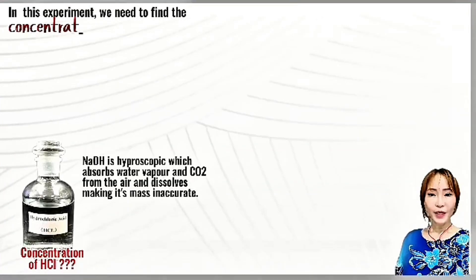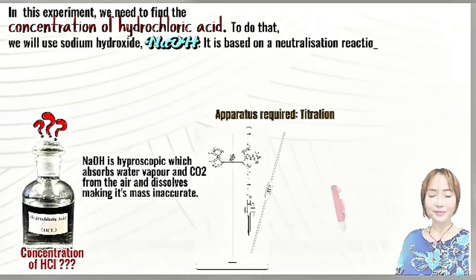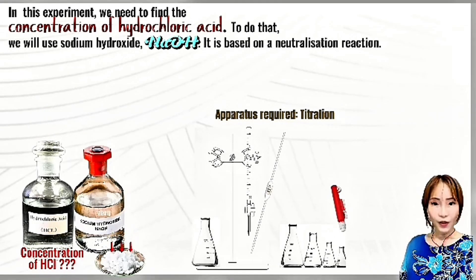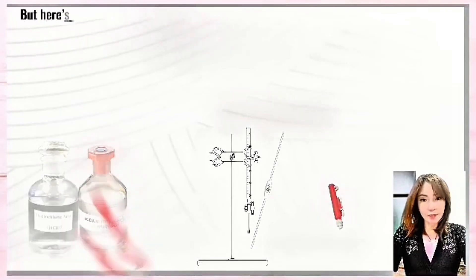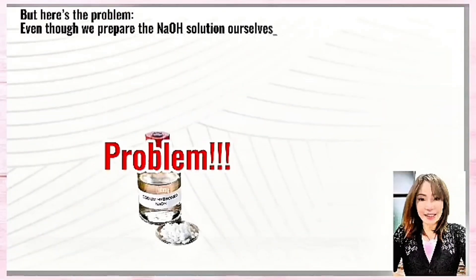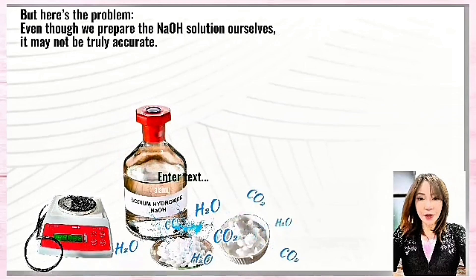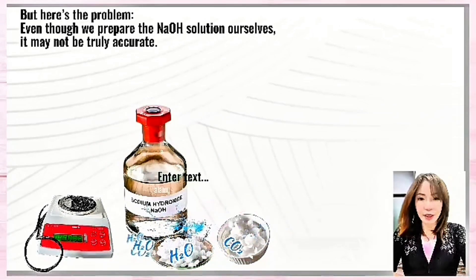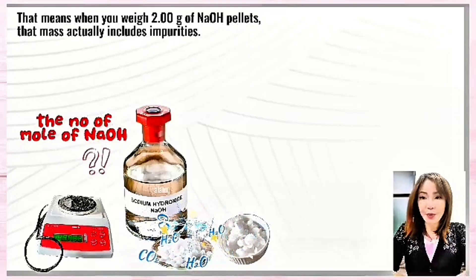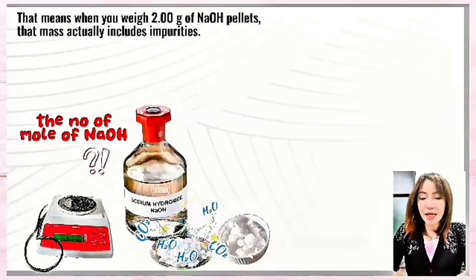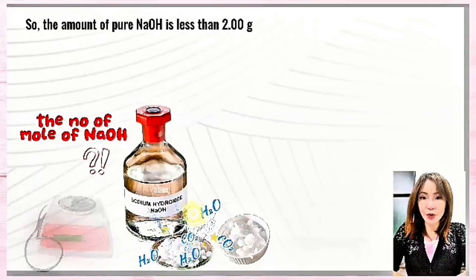In this experiment, we need to find the concentration of hydrochloric acid. To do that, we will use sodium hydroxide, NaOH. But here is the problem — NaOH is unstable in air. Even though we prepare the NaOH solution ourselves, it may not be truly accurate, because when you weigh 2 grams of NaOH pellets, that mass actually includes impurities, so the amount of pure NaOH is less than 2 grams.